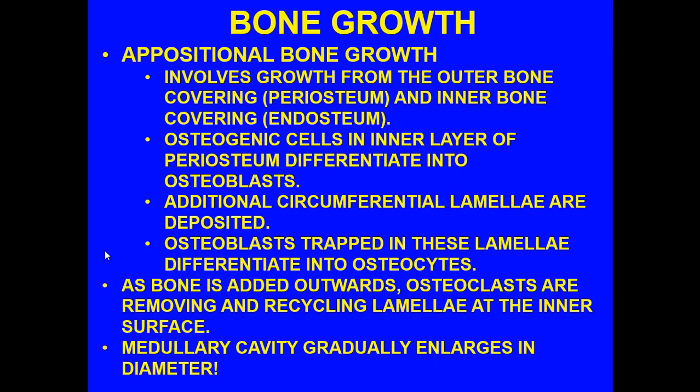There are two types of bone growth. One is appositional. Appositional bone growth involves growth from the outer bone covering where the periosteum is and the inner bone covering where the endosteum is. Osteogenic cells in the inner layer of the periosteum differentiate into osteoblasts — blasts build. Additional circumferential lamellae are deposited. The osteoblasts are trapped in these lamellae and differentiate into osteocytes. As bone is added outward, the osteoclasts are removing and recycling lamellae at the inner surface, and the medullary cavity gradually enlarges in diameter.